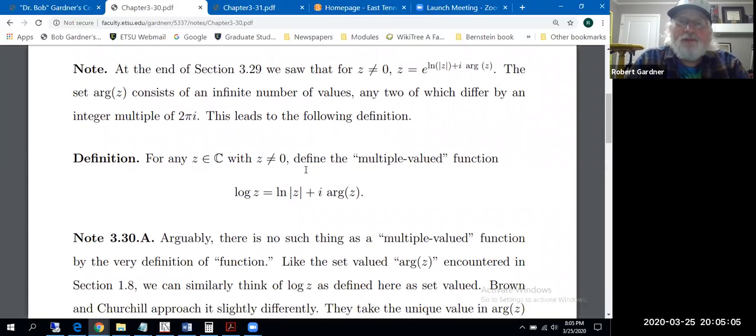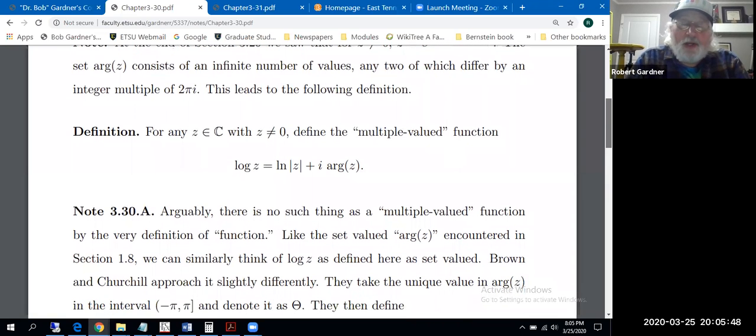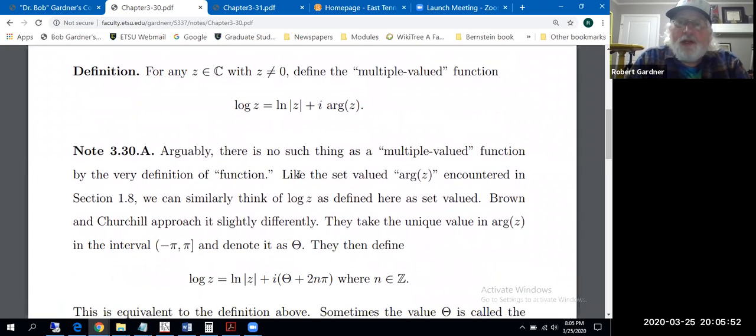And that's what the next definition says. If we take a non-zero complex number z, define, you know, it pains me inside to say this, define the multiple valued function. Log z equals natural log of the modulus of z plus i times arg z, little argument. Okay. So the right hand side is infinitely valued. So it's not really a function, a multiple valued function. There's no such thing. Functions have unique outputs. We could deal with it by it being a set valued function and saying we get a set of values. We just get one set of values. So that would be consistent, but we'll make the most of it in terms of Brown and Churchill's terminology.